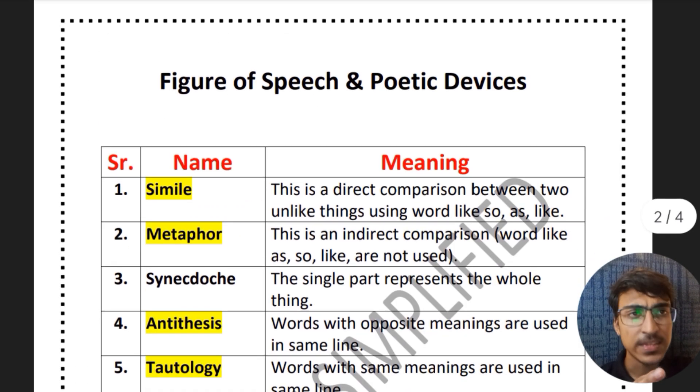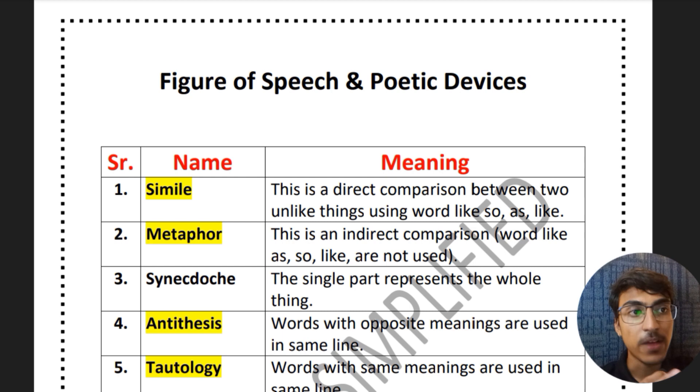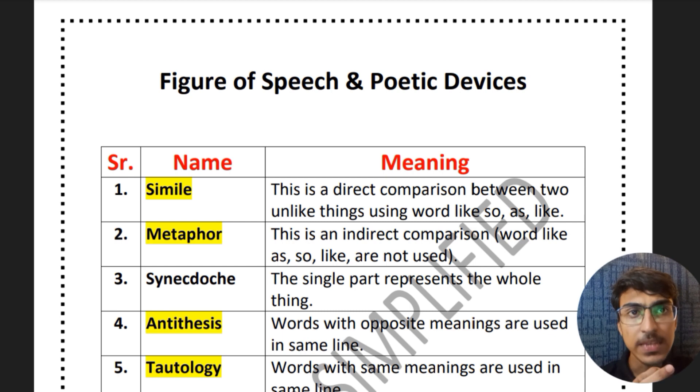These are the list of figures of speech and poetic devices which are used in English literature. You must remember the name and the corresponding meaning.